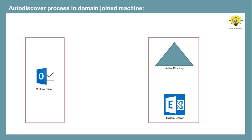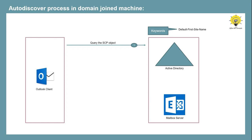When a user tries to configure his profile in Outlook client from a domain-joined machine, Outlook sends an LDAP query to Active Directory. Through this LDAP query, Outlook tries to locate all available SCP objects within Active Directory. Then Outlook locates the keywords attribute from the SCP object, and from the keywords attribute, Outlook tries to find the location of the client access services. Once Outlook client finds that location, it tries to connect to the Autodiscover URL retrieved from the service binding information attribute of the SCP object.